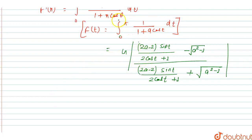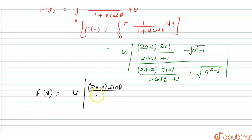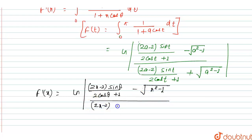Then putting a = x and t = θ, f'(x) can be written as: ln of [(2x - 2 sin(θ/2) cos(θ/2) + 1 - √(x² - 1)) / (2x - 2 sin(θ/2) cos(θ/2) + 1 + √(x² - 1))], evaluated from 0 to π.